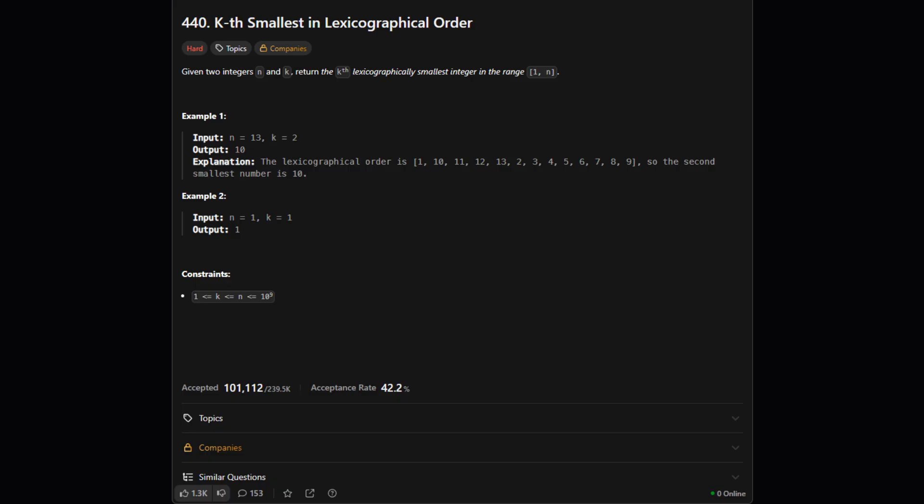Alright, so here's the task. We're given two numbers, n and k, and we need to imagine all the numbers from 1 up to n, and then sort them as if they were words. This is called lexicographical order. Our job is to find the number that ends up in the k-th position of that sorted list.